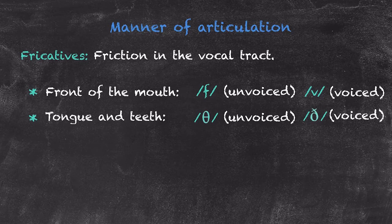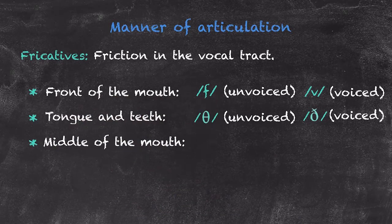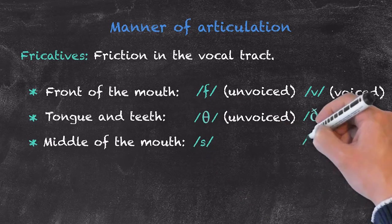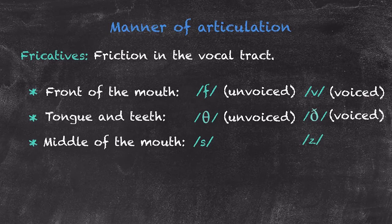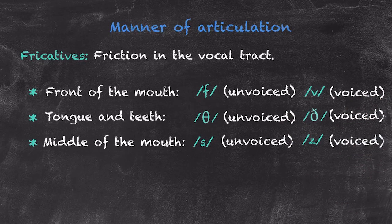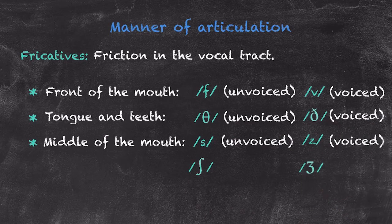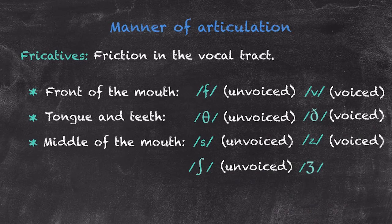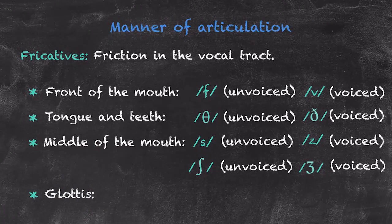Moving a bit further back in the mouth, we have our friction from the middle of our mouth — four sounds: S and Z, and SH and the voiced ZH sound as in 'measure.' Those sounds are made in the same manner and place, with one voiced and the other unvoiced. Then we have our sound furthest back in the glottis — the H sound. That aspiration becomes a lot more audible in what are called the glottal languages, such as German, Dutch, and Arabic.